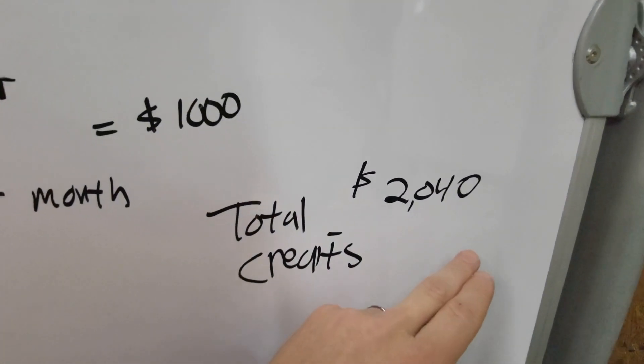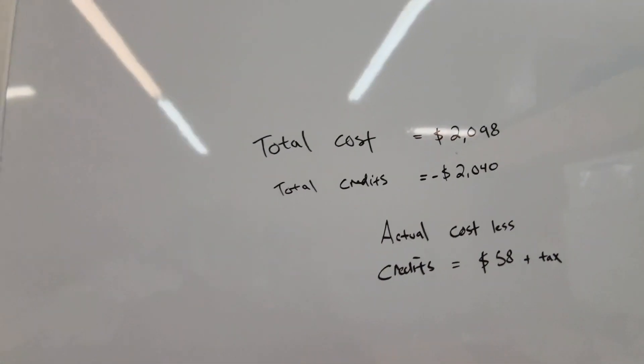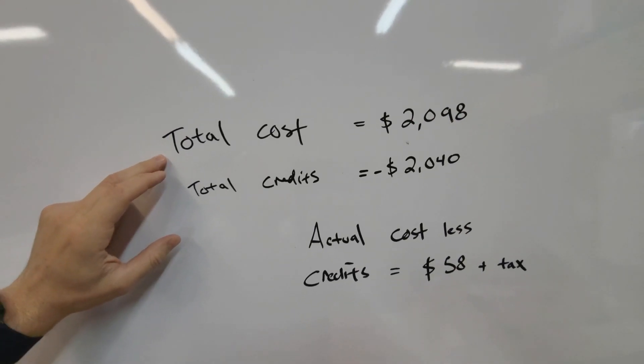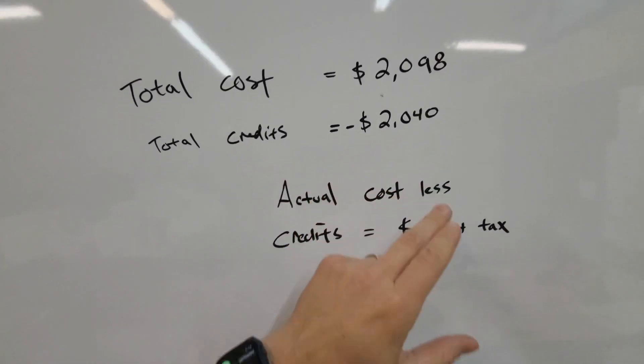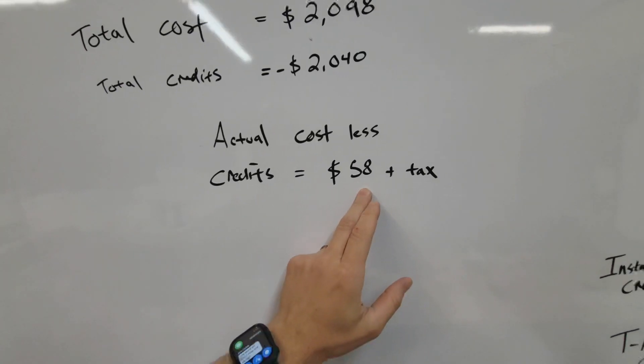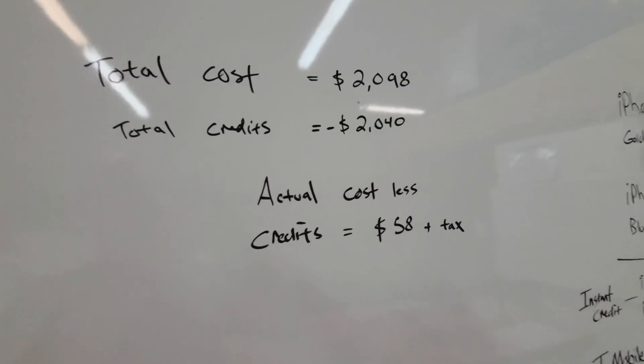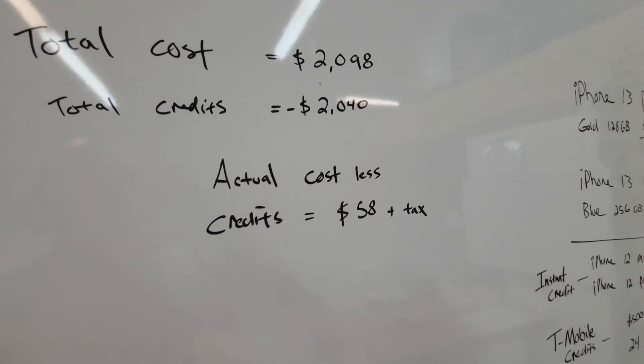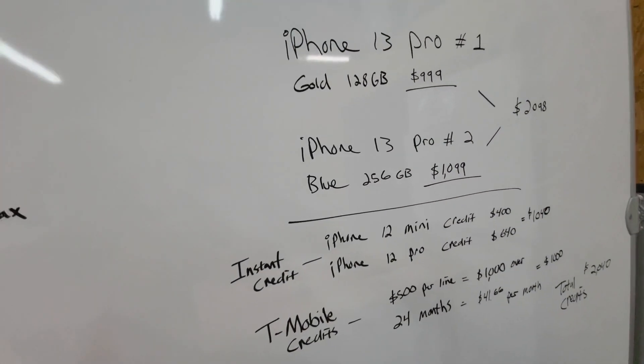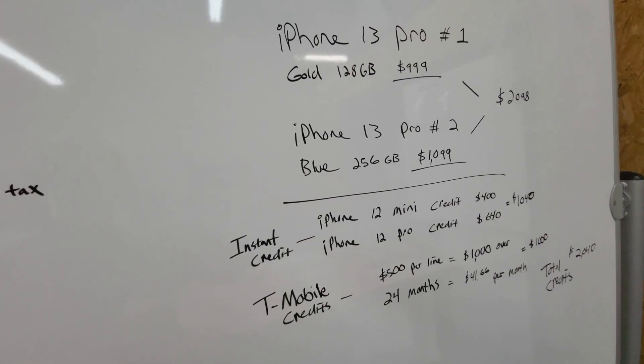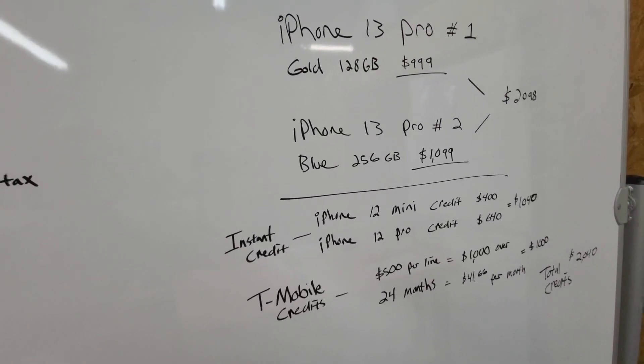All right, so our total credits here: $2,040. Now that means our total cost to get the new phones is $2,098. Our total credits: $2,040. The actual cost less our credits is $58 plus the tax on the phones. So I literally get to go home and say, hey, we get new iPhones for $58 plus tax. And she's gonna be like, oh my god, that's so amazing, let's do it. And I'll say okay, and then the little details, well they'll work themselves out. But at least I get a new phone.